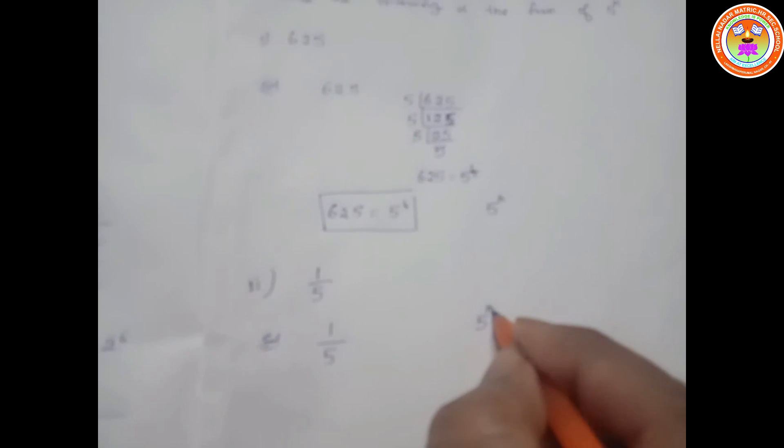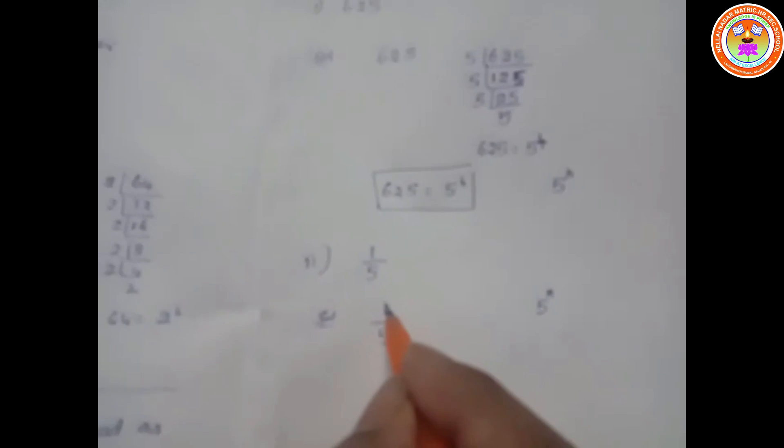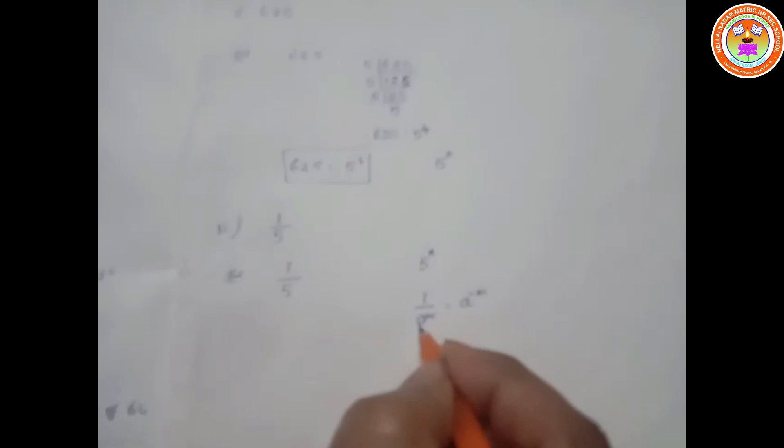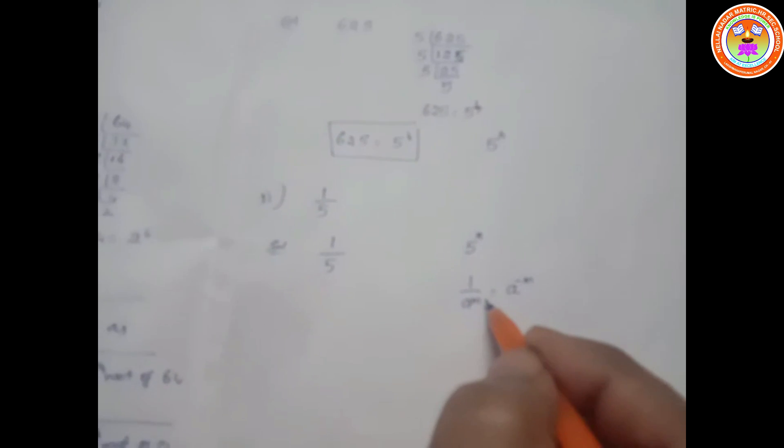Second subdivision: 1 divided by 5. You have to make it in the form of 5 to the power of n. We know that 1 by a to the power of n can be written as a to the power of minus n. So 1 by 5 equals 5 to the power of minus 1. It is now in the form of 5 to the power of n.